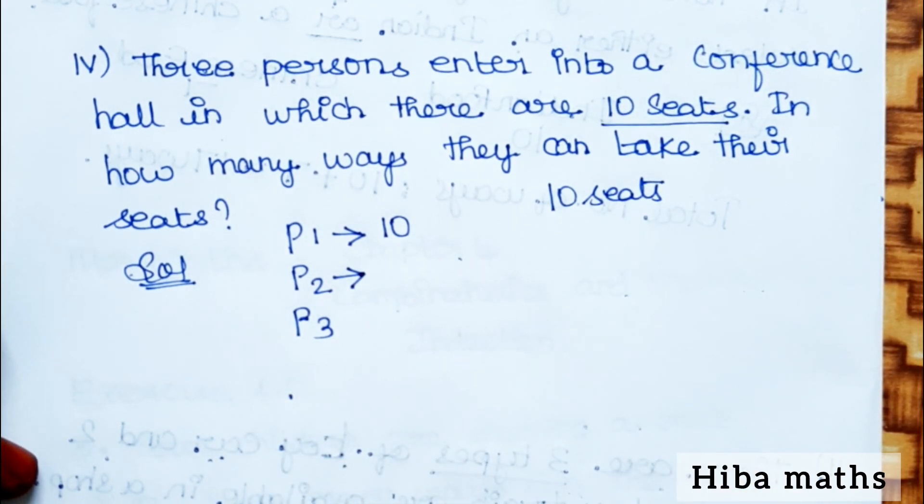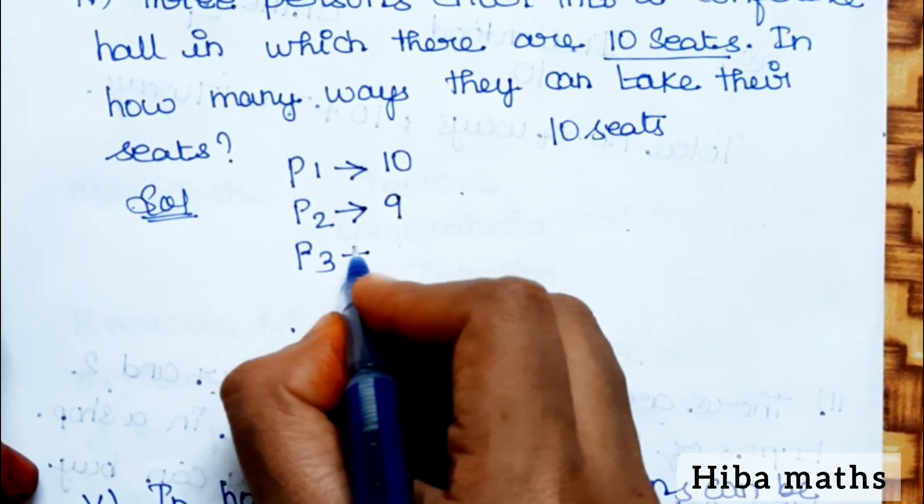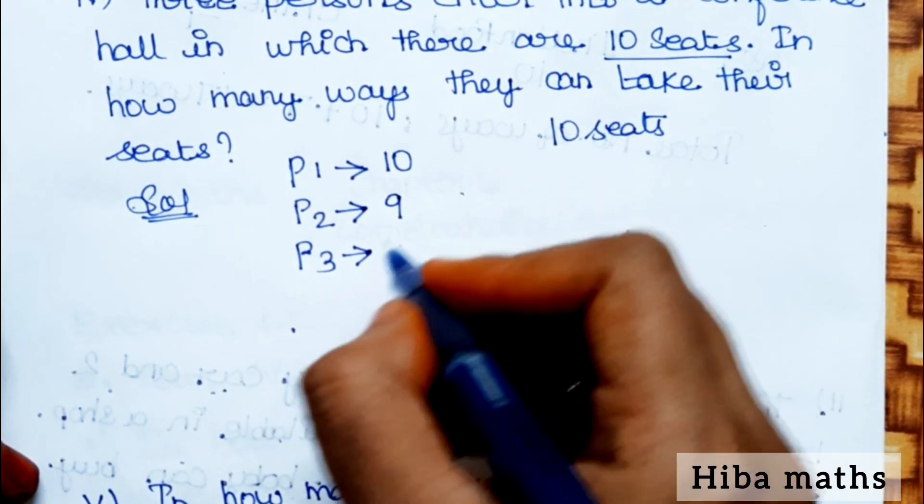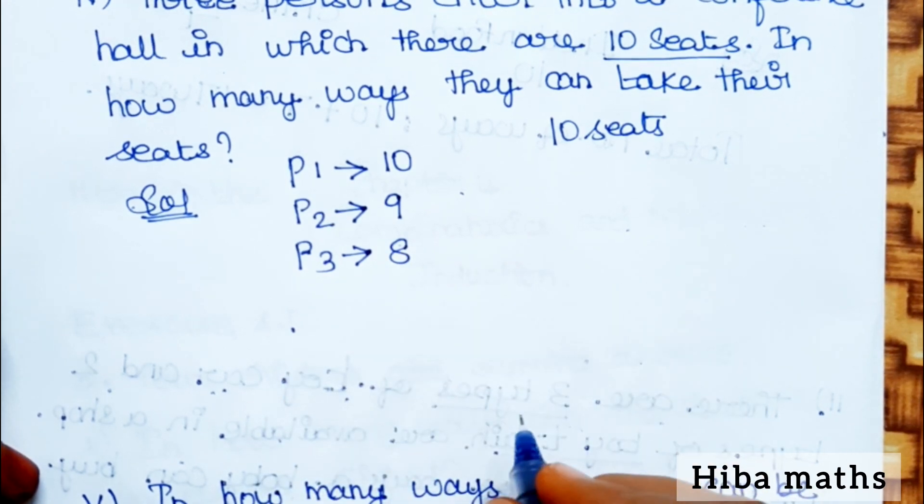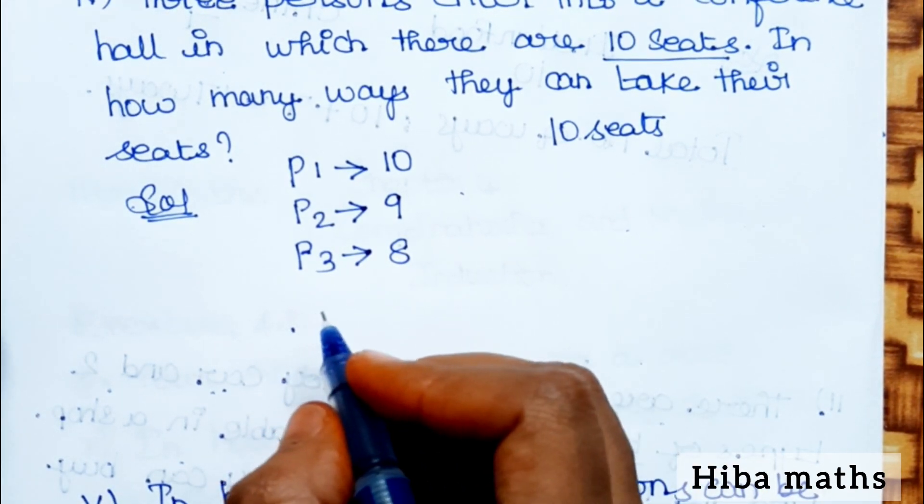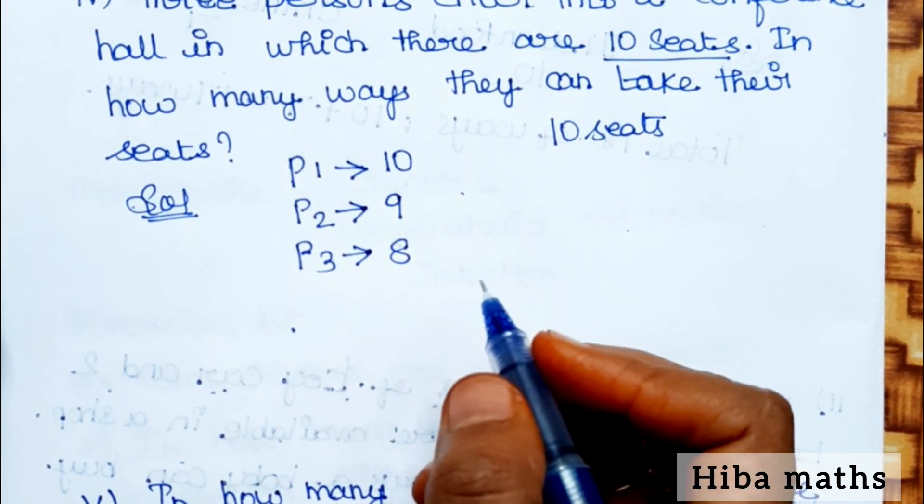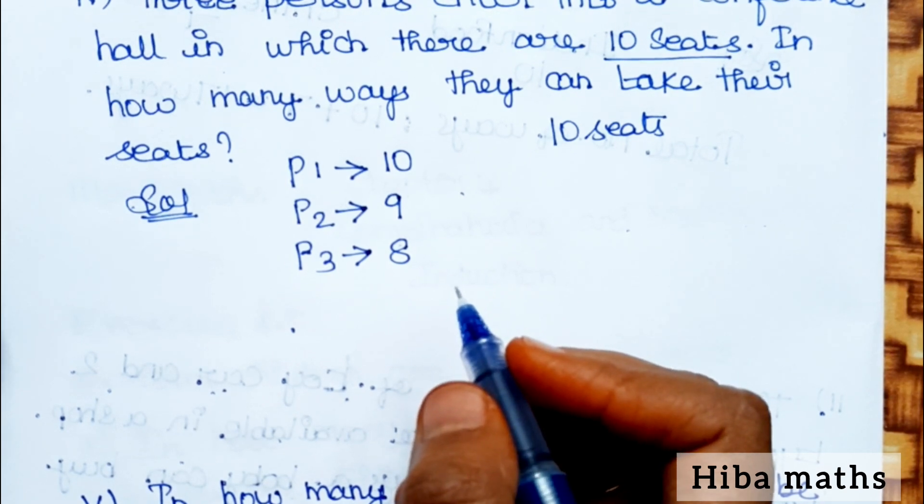First person enters, all 10 seats are available. Balance 9 seats for the second person. Balance 8 seats for the third person. If we multiply all these, we will have the answer.